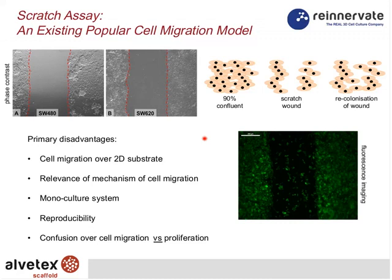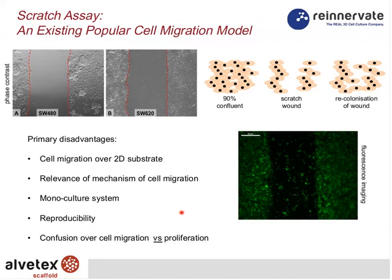The movement of cells in 2D systems also questions the relevance of the migration mechanism. The scratch assay is also a monoculture system involving only one cell type, whereas in a real colonic tumor invasion obviously involves other cell types. Additionally, reproducibility can be variable, and there is sometimes confusion over whether the space is closing due to migration or proliferation. These issues must be considered when evaluating scratch assay data.